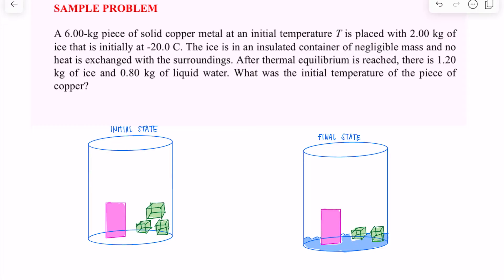You notice that there is some phase change involved — only for the 0.80 kilogram of ice. So the question is: what was the initial temperature of the piece of copper? The piece of copper, which is initially according to the problem — let's write what we know.